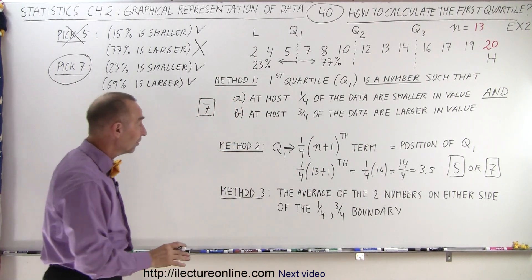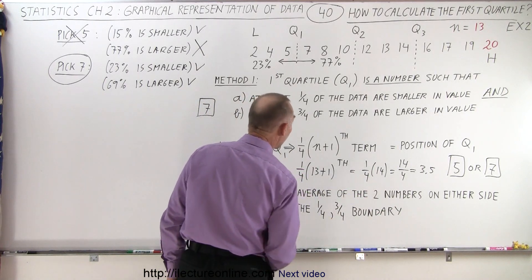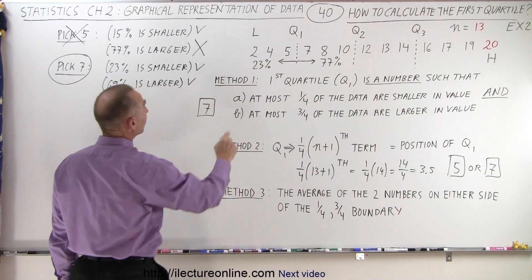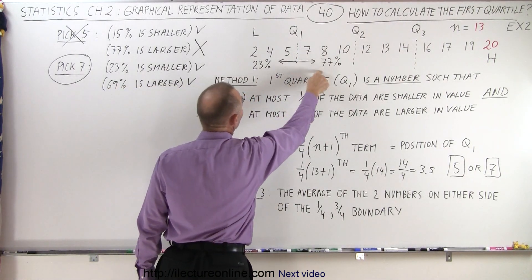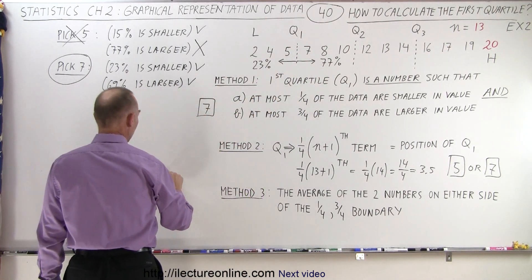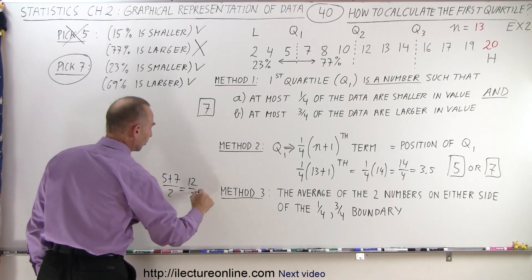The third method says you take the average of the two numbers on either side of the one quarter-three quarter boundary, which is still between the two right there. Since the boundary is still between the two, 23 and 77, 25 falls right in between. We can take the average, so it would be 5 plus 7 divided by 2, which is equal to 12 divided by 2, which is equal to 6.